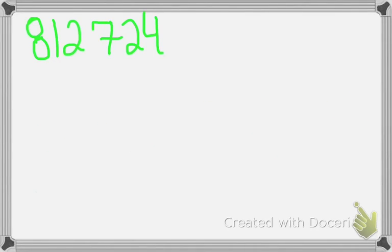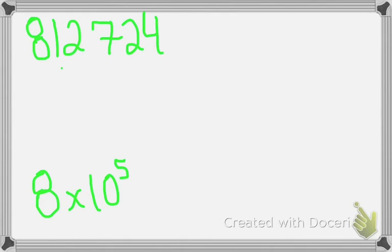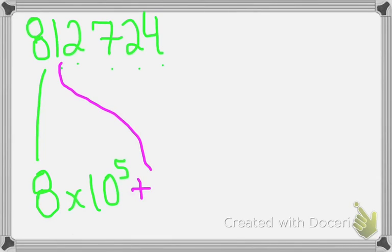So we take our first number, which is 8, and multiply it by 10 to the power of 5, because there are 5 numbers after the 8 in our original number. So now we take our second number, which is 1, and multiply it by 10 to the power of 4, because there are 4 numbers after the number 1 in our original number.